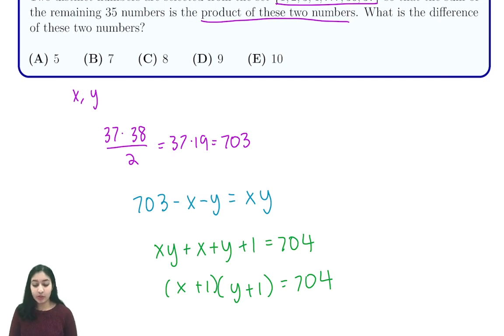Now we want to find possible solutions for x and for y. So first thing that we do is factor 704, and you'll see that it's 2 to the 6 times 11.